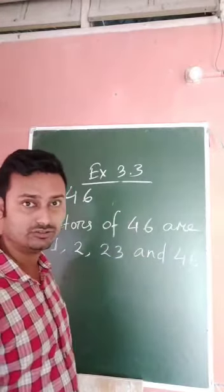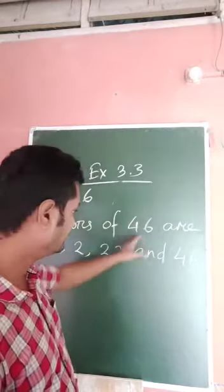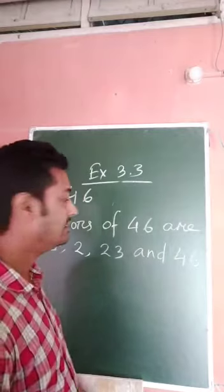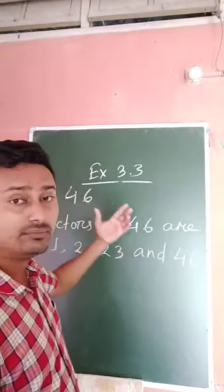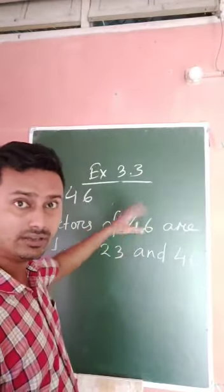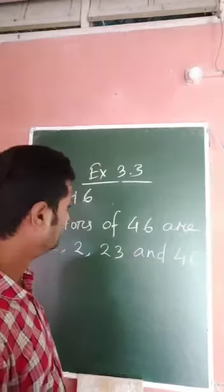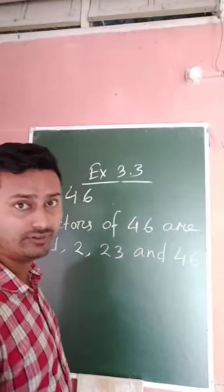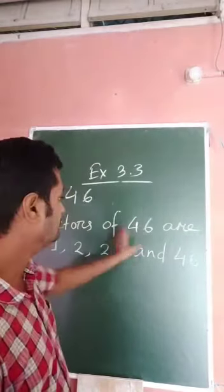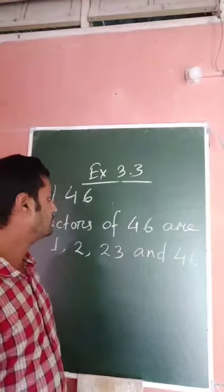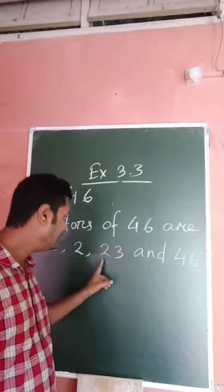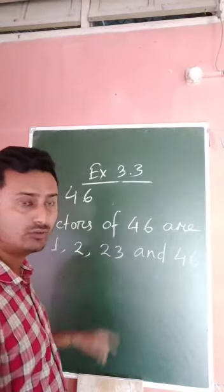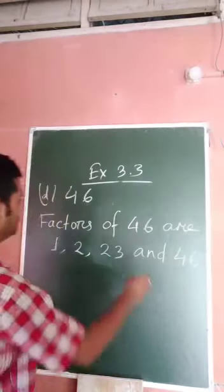Since the number is not divisible by 3, it is not divisible by 6. Since it is not divisible by 4, it cannot be divisible by 8. Not divisible by 9 because it is not divisible by 3. Checking up to 23: 2 times 23 is 46, so 23 is a factor. The factors of 46 are 1, 2, 23, and 46.